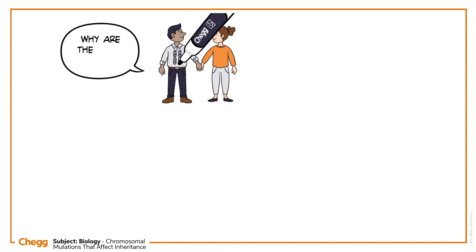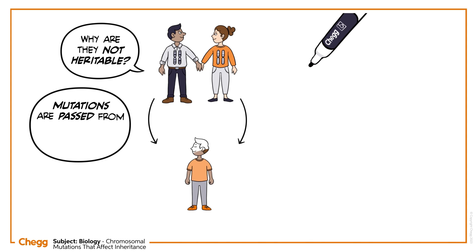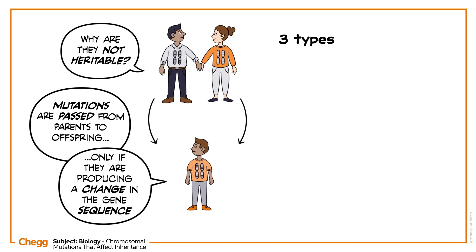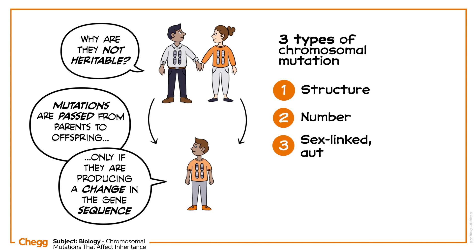Do you wonder why all chromosomal mutations are not heritable? Mutations are passed from parents to offspring, only if they are producing a change in the gene sequence. There are three types of chromosomal mutation. These are mutations on the structure of the chromosome, mutations on the number of chromosomes and sex-linked autosomal mutations.